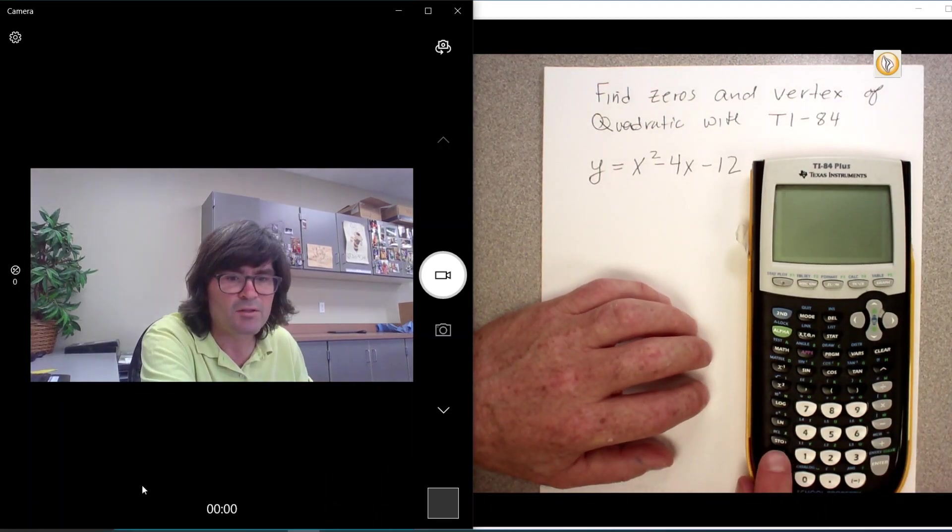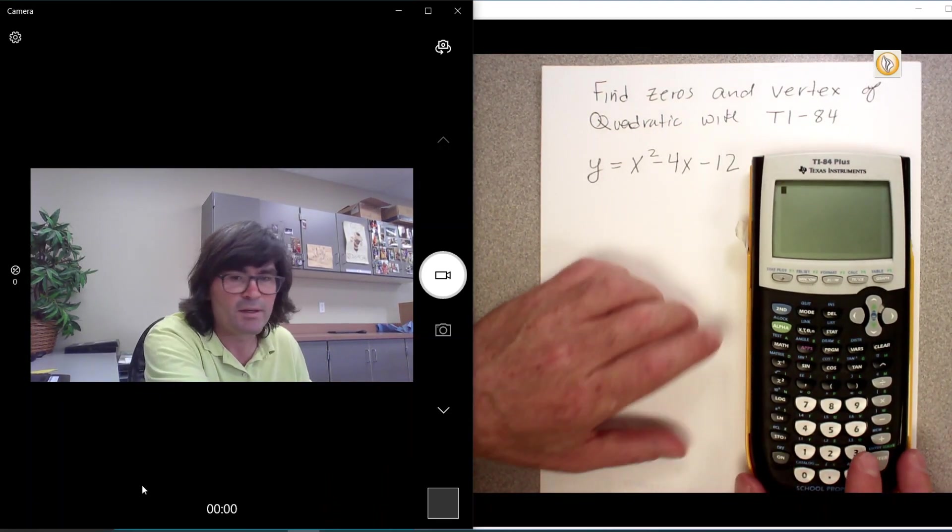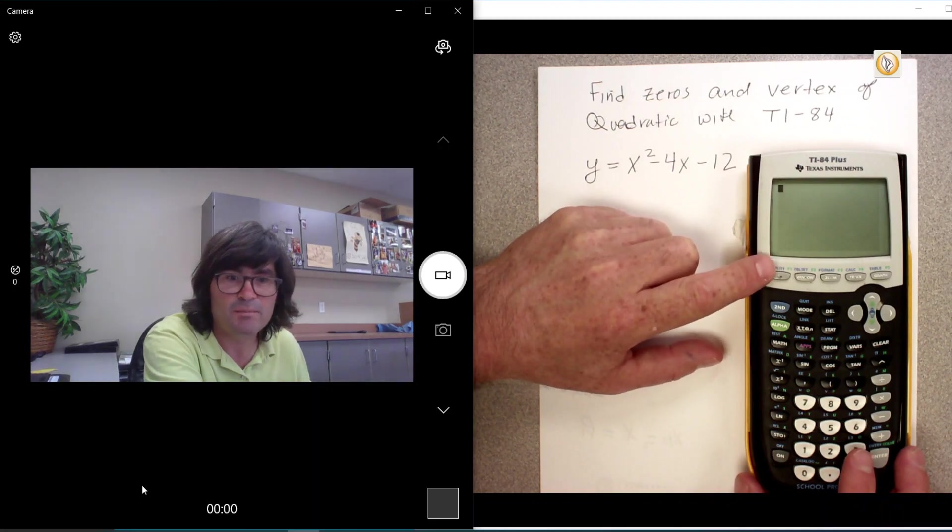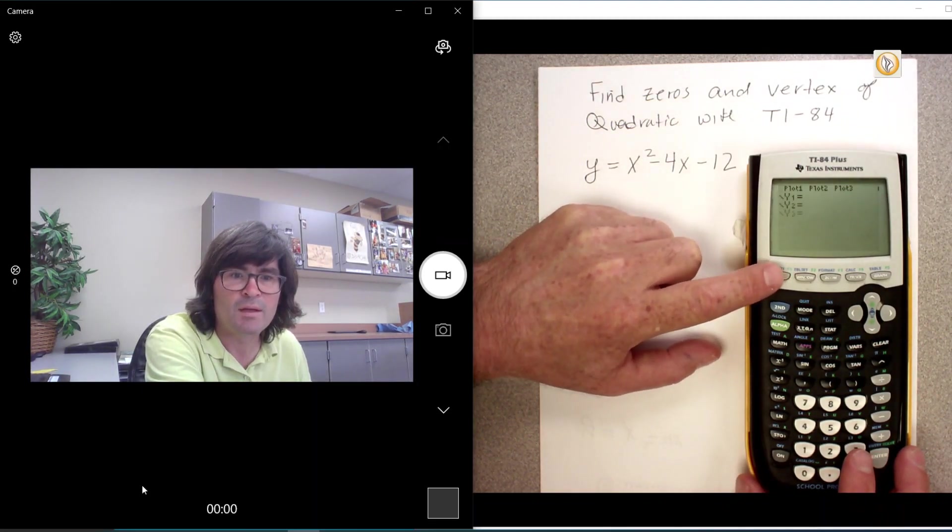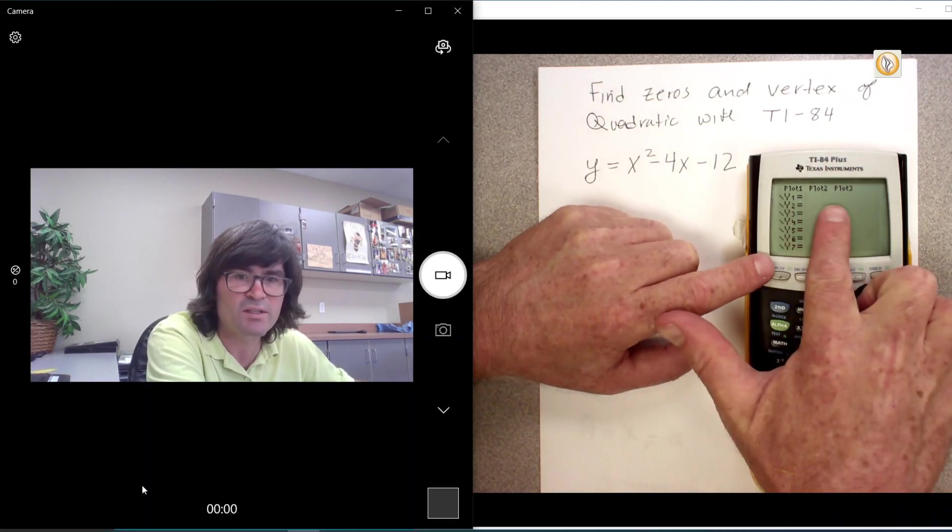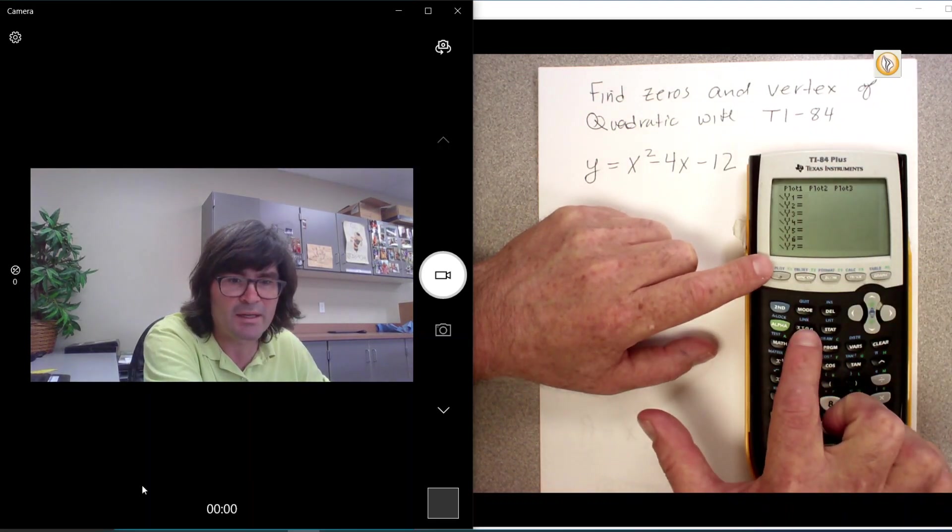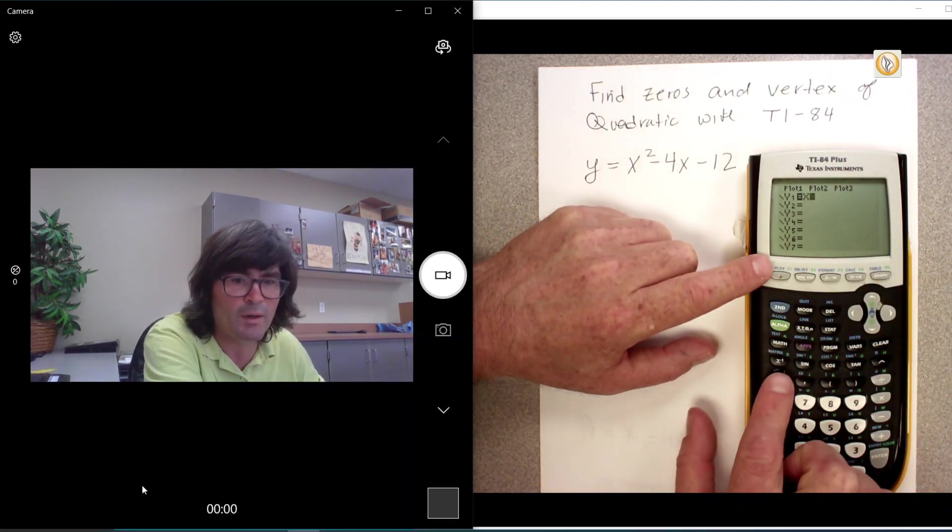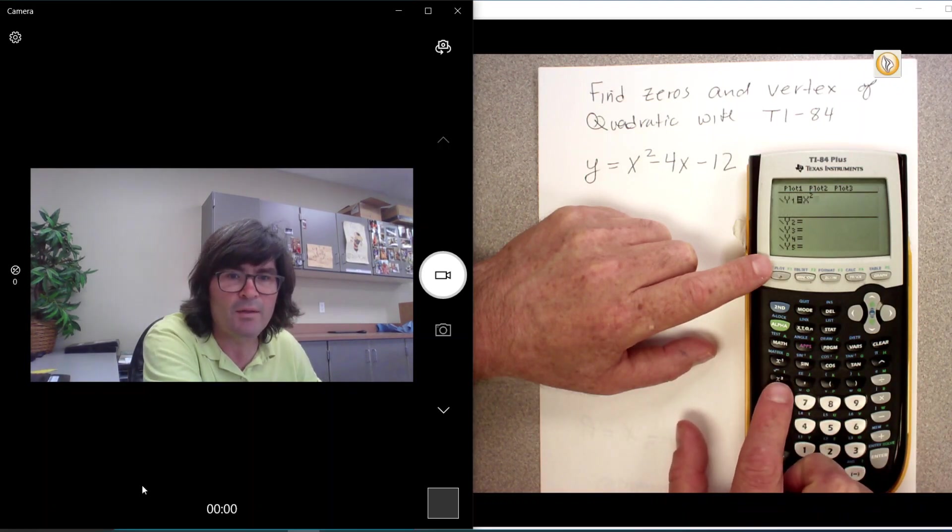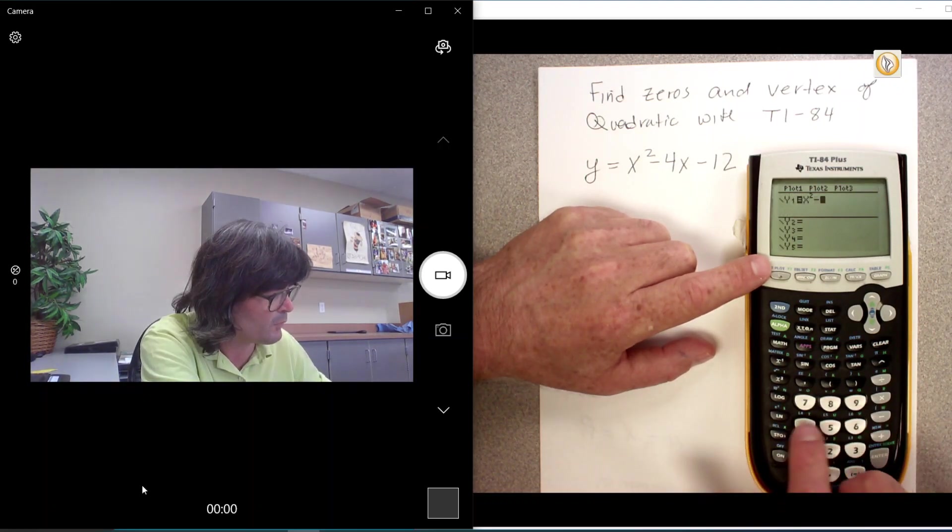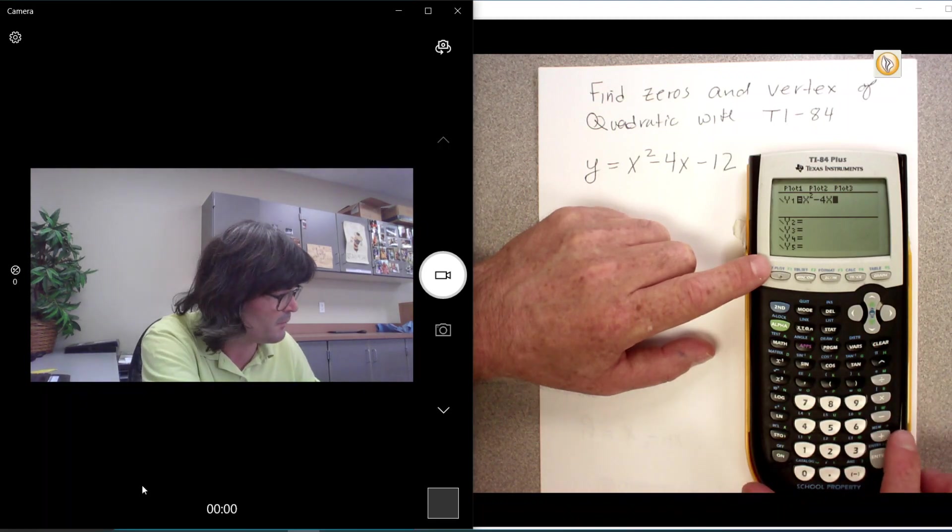I've got mine turned on here and I'm going to first graph my function by pushing y equals right here. Where it says y1, I'm just going to type in x squared and then minus 4x and then minus 12.